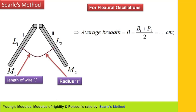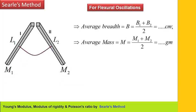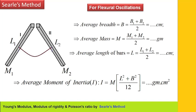Now, the parameters: the average breadth B is to be noted, which is B1 (breadth of bar 1) plus B2 (breadth of bar 2), divided by 2, in centimeters. Average mass M of each bar is M1 plus M2 divided by 2, in grams. Average length of bars is L1 (length of bar 1) plus L2 (length of bar 2) divided by 2, in centimeters.